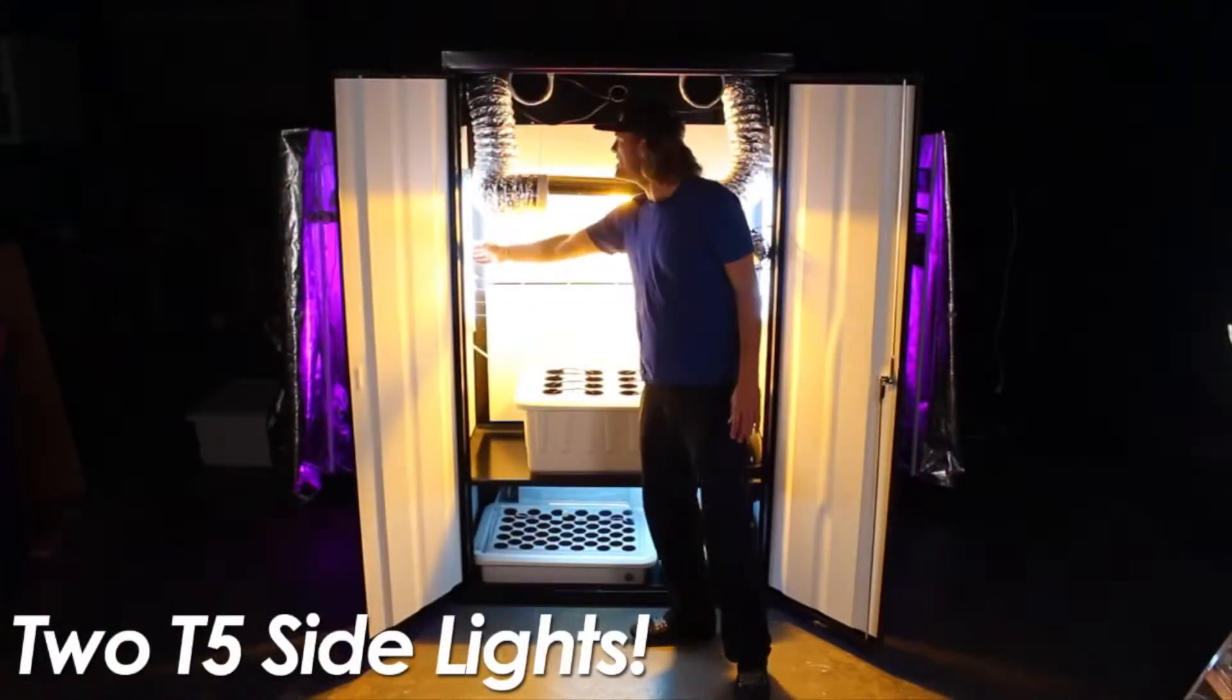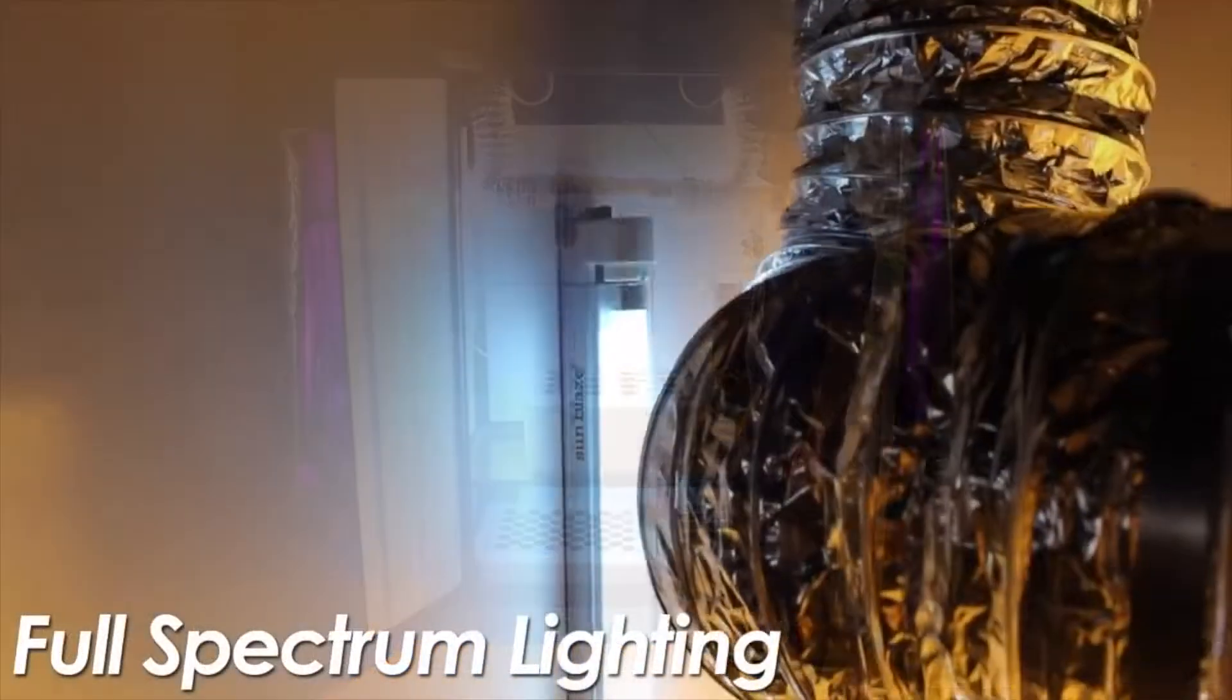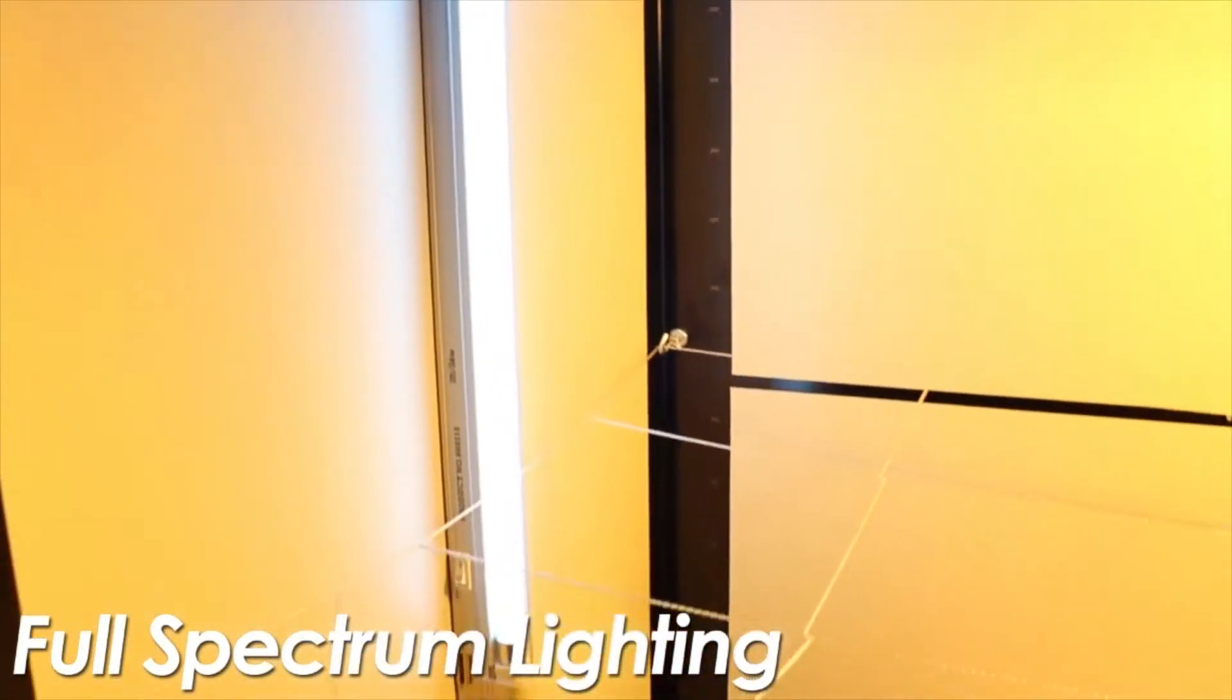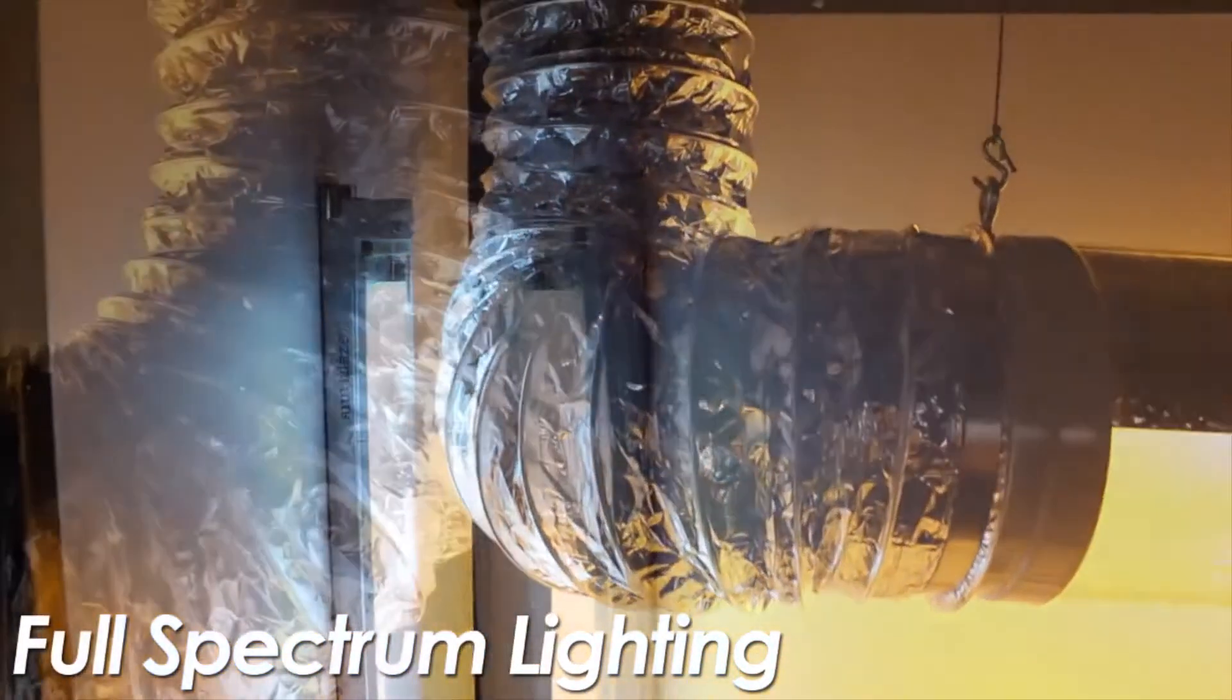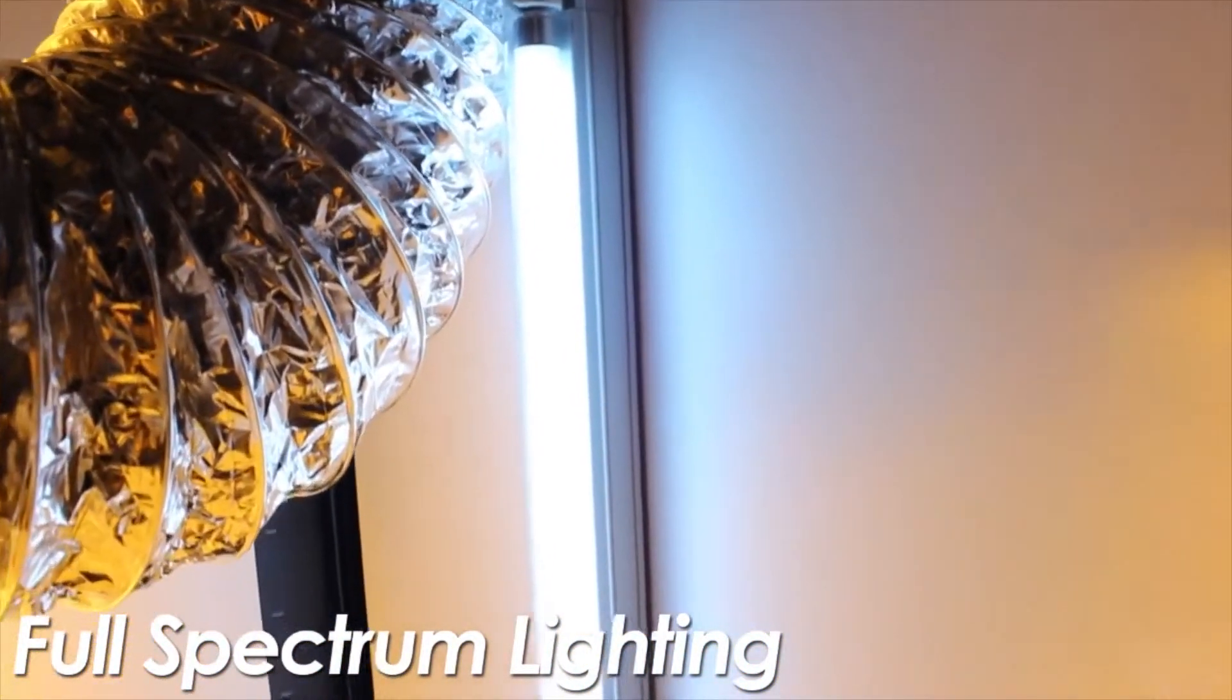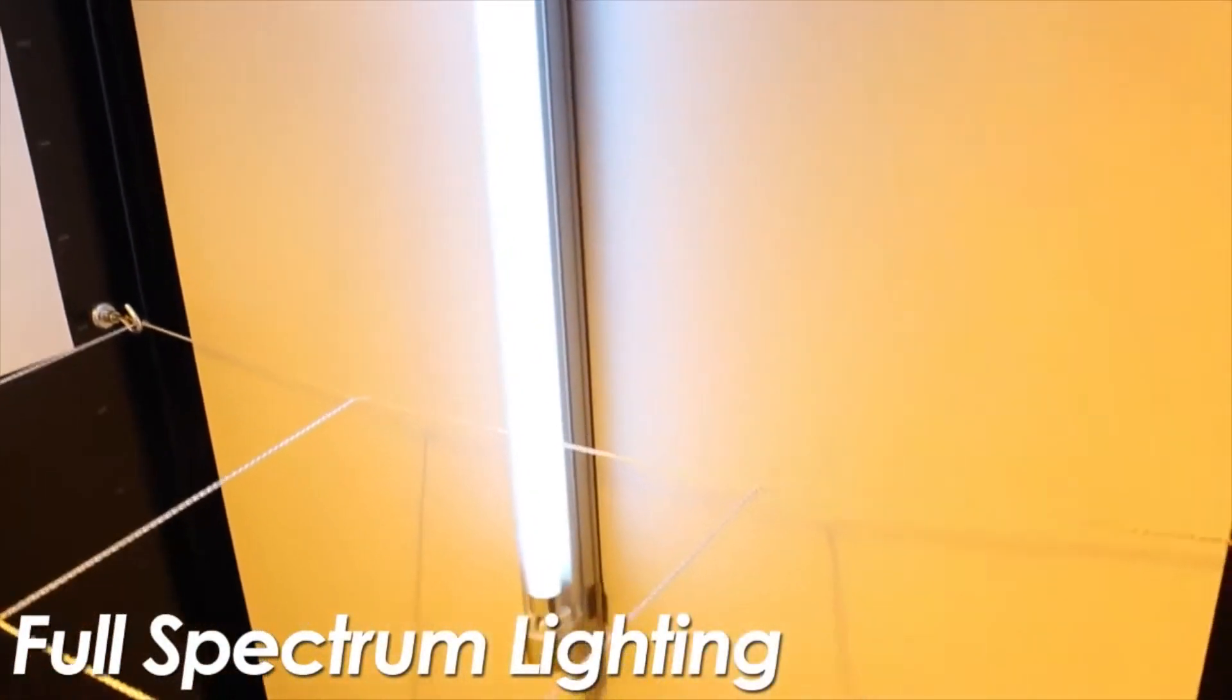On the side are two T5 cool white fluorescents. The yellow light from a high-pressure sodium mimics the flowering season of fall, and the cool white is more of a summertime. When you combine these two spectrums, it creates a full spectrum, and now you have much healthier plants.